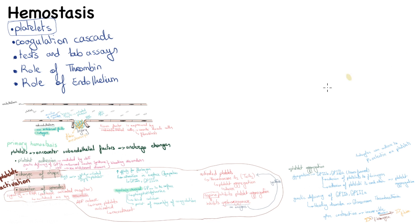This is the end of the first video on hemostasis. The second video will cover the coagulation cascade, tests and lab assays, thrombin, and the endothelium.